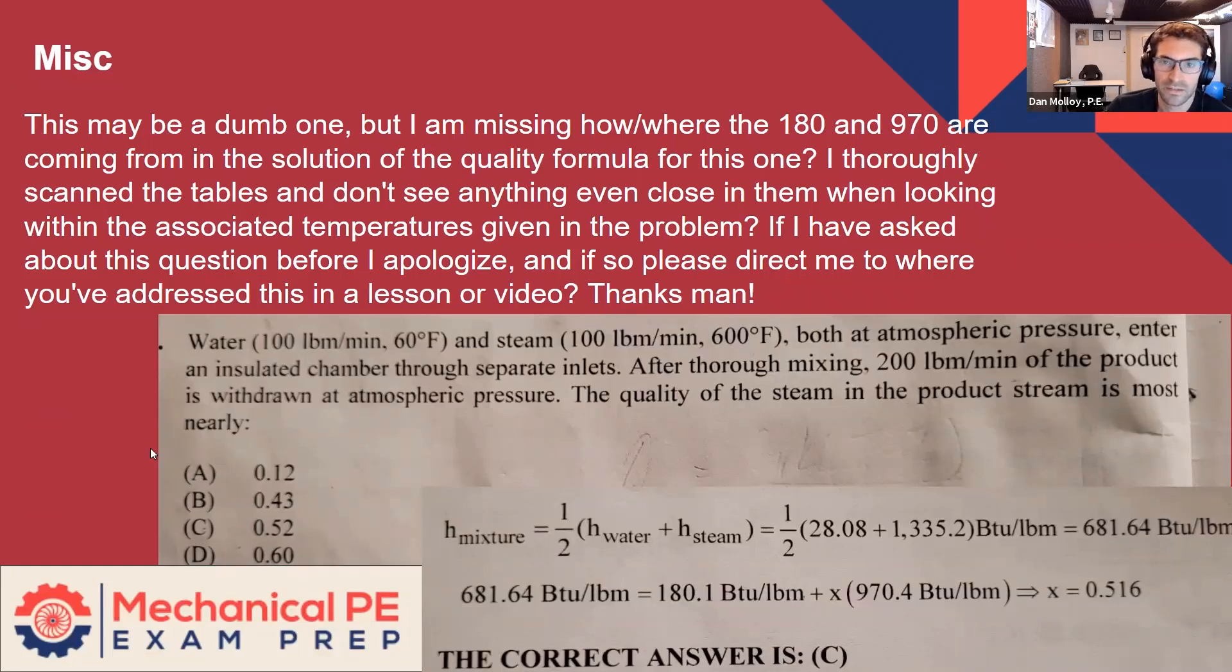Okay, jumping ahead to miscellaneous. This may be a dumb one, but I'm missing where the 180 and 970 are coming from in the solution of the quality formula for this one. I thoroughly scanned the tables and don't see anything even close to them when looking within the associated temperatures given in the problem. If I've asked this before, I apologize.